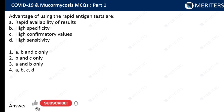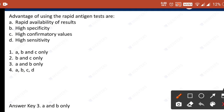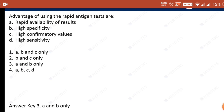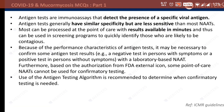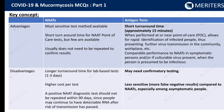The advantages of using the rapid antigen test are: rapid availability of results, high specificity, high confirmatory values, or high sensitivity? The advantages are rapid availability of results and high specificity. One more concept to clear here is specificity versus sensitivity. These are the key points related to rapid antigen testing — please note them down.